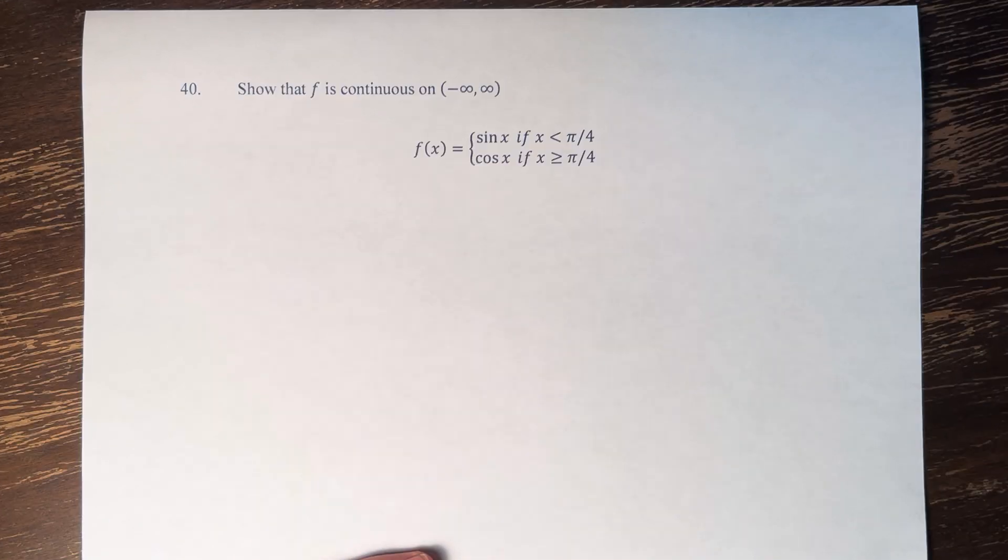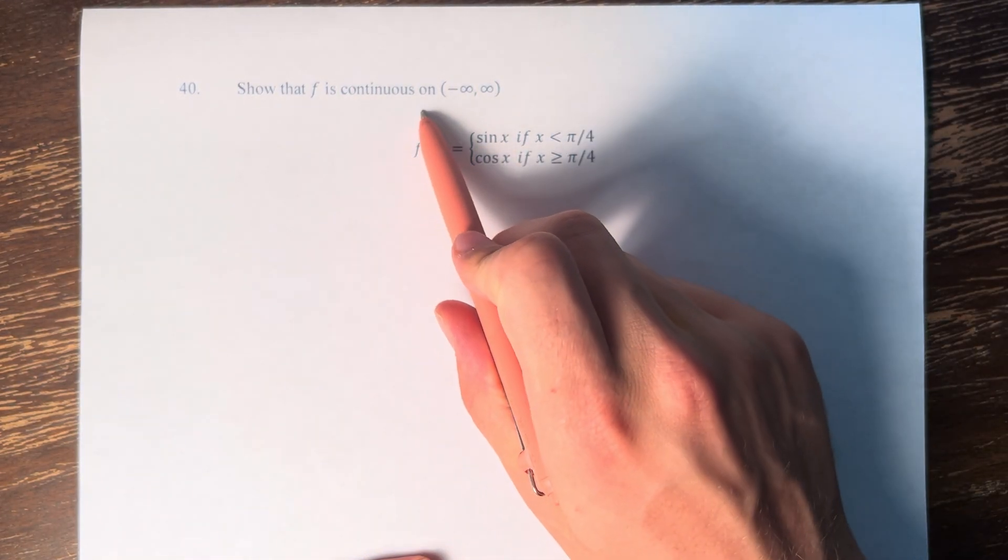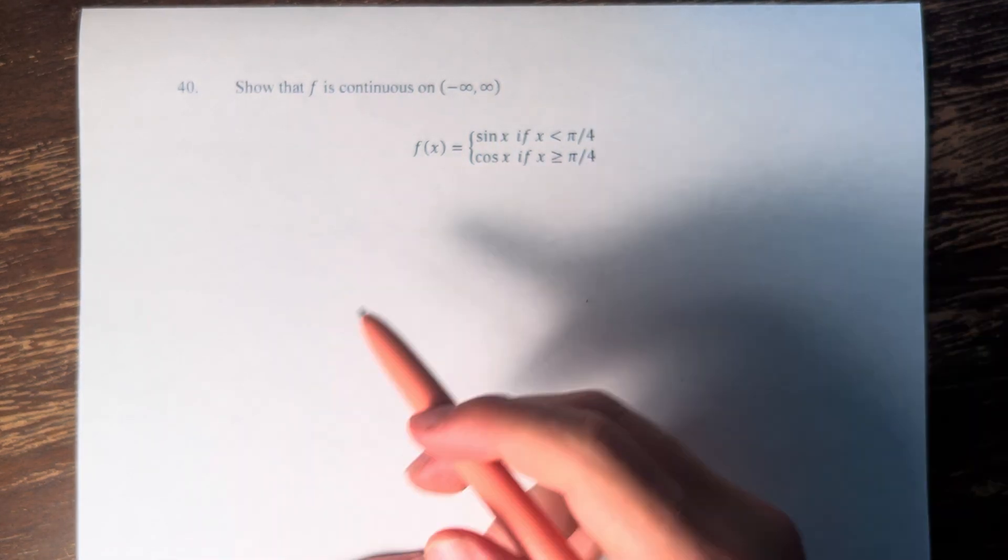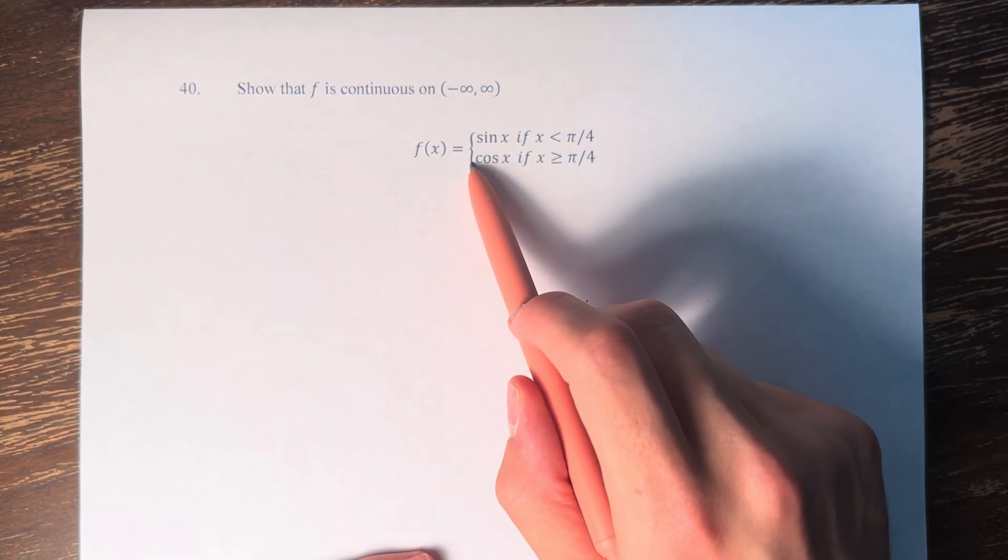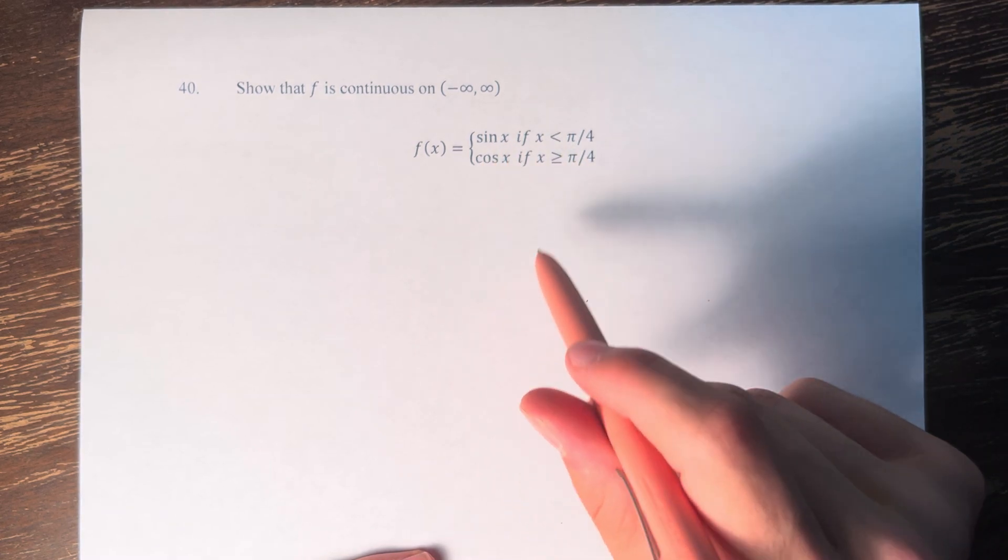Hello and welcome back to another video. In this problem, we're asked to show that f is continuous on the interval from negative infinity to infinity. And we have f of x equals sine of x if x is less than pi over 4, and f of x equals cosine of x if x is greater than or equal to pi over 4.